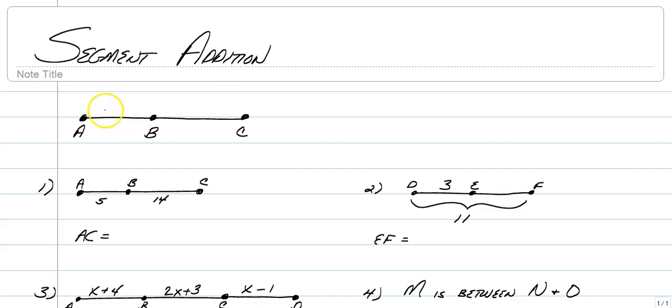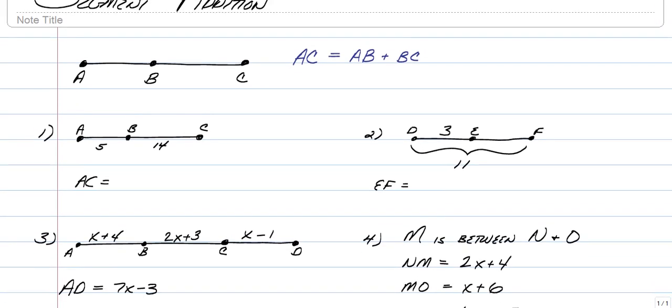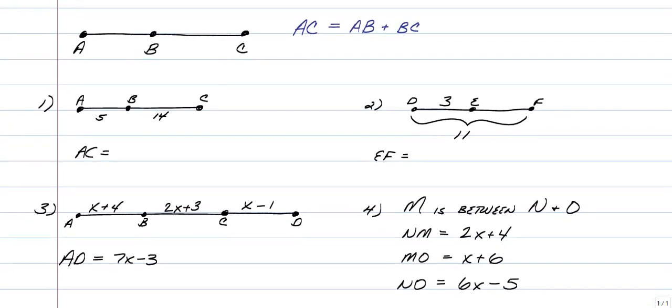So if we were to write this in terms of letters, we would say that the segment AC is actually equal to the sum of little segment AB plus little segment BC. And that's how we get the big segment AC. So I just wanted to kind of clarify what segment addition is.